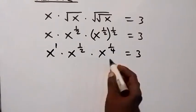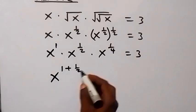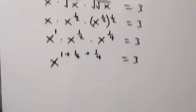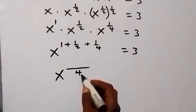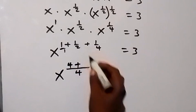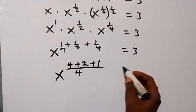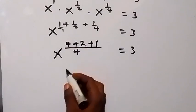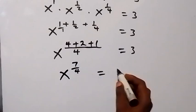From here, using the law of indices, we can add the powers: that's 1 plus one half plus 1 over 4, equals 3. When we bring these fractions together with denominator 4, that's 4 over 4 plus 2 over 4 plus 1 over 4, which equals 7 over 4. So this is x raised to power 7 over 4, which equals 3.